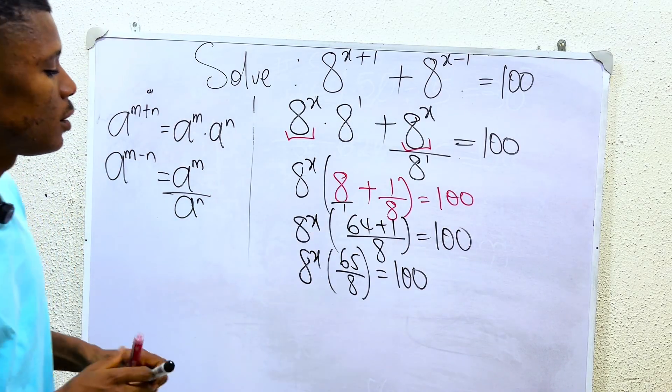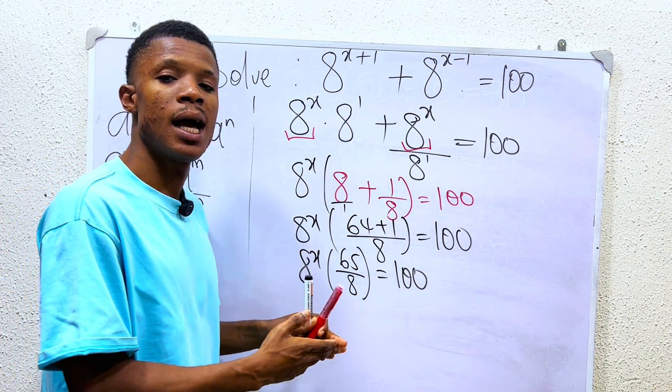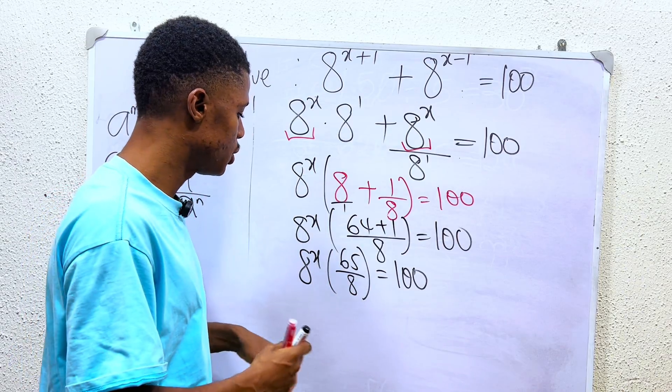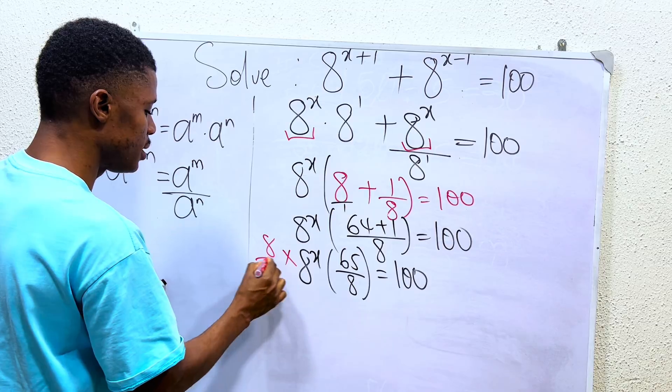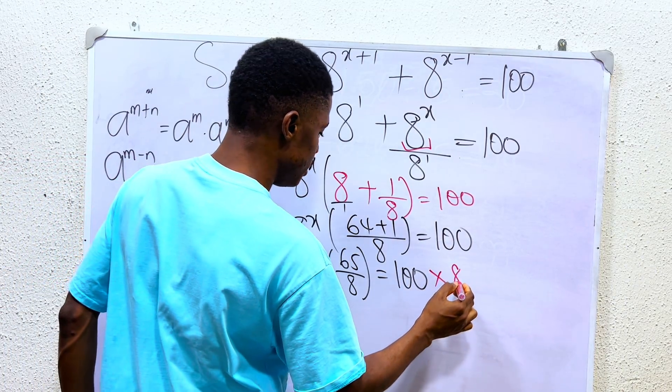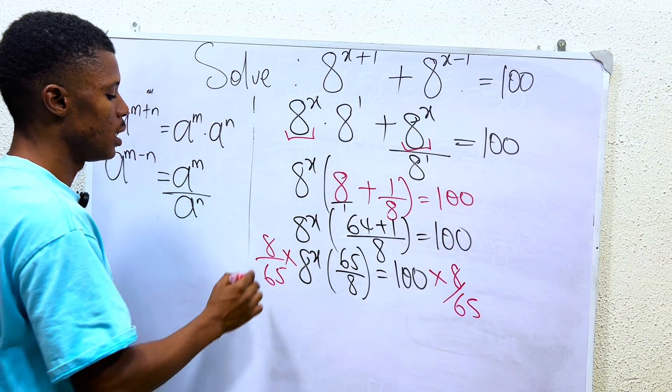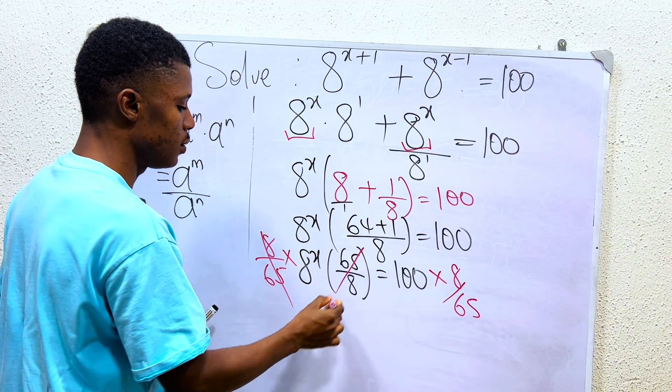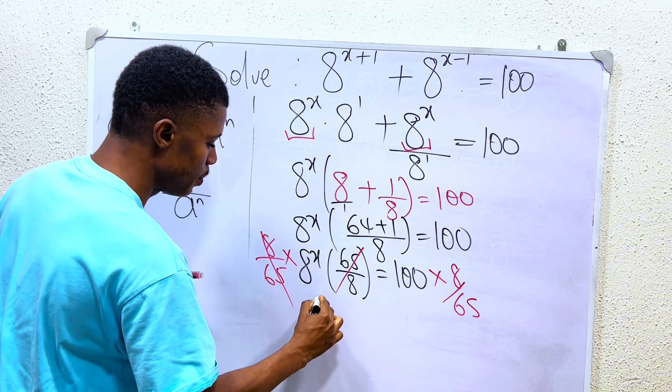Then, to get rid of this 65 over 8, I can simply multiply both sides by the reciprocal, which is 8 over 65. So if I multiply this side by 8 over 65, I also have to multiply here by 8 over 65, so that these two cancel out. We are left with 8 power of x, and that equals...